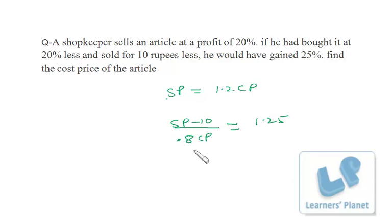Now go for the cross multiplication. 0.8 into 1.25 that's 1, so it's only CP. SP is equal to 1.2 CP, so 1.2 CP minus 10 is CP. That means 0.2 CP is 10, that means CP is equal to 50 rupees. Very simple.